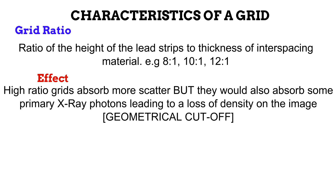However, because the lead strips are thicker, high ratio grids are also likely to absorb some primary photons. This leads to a reduction in density on the radiographic image, because some photons that should form useful densities are absorbed and do not reach the image receptor. This is known as geometrical cutoff, and it is for this reason that when a radiographer uses a grid, he or she needs to increase the exposure factors compared to when a grid is not used, to compensate for the useful photons absorbed.